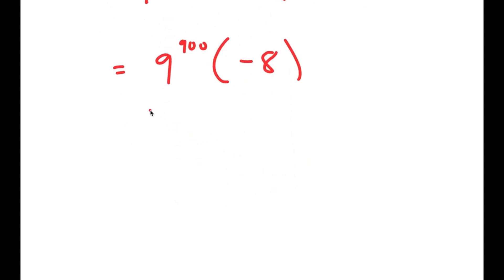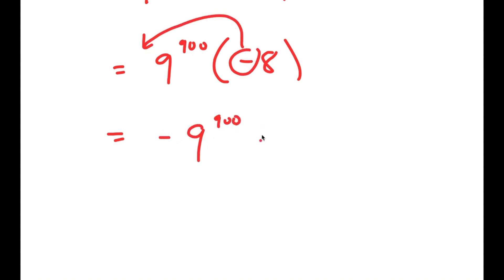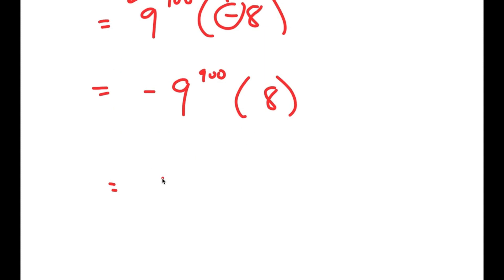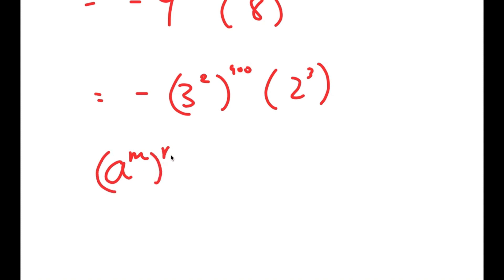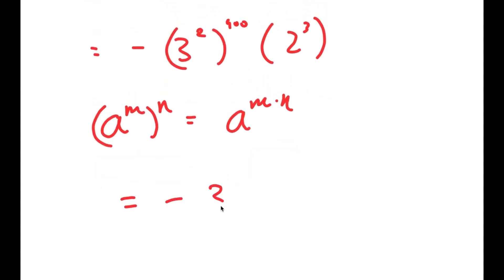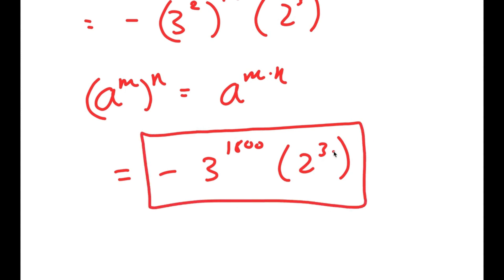We can't get the exact numerical value because 9^900 is such a large number. However, we can get the simplified form. I'm going to move the negative sign to the front, giving negative 9^900 times 8. This becomes negative (3²)^900 times 2³. Using the exponential property (a^m)^n = a^(m·n) on (3²)^900, I get negative 3^1800 times 2^3. This is my final solution.